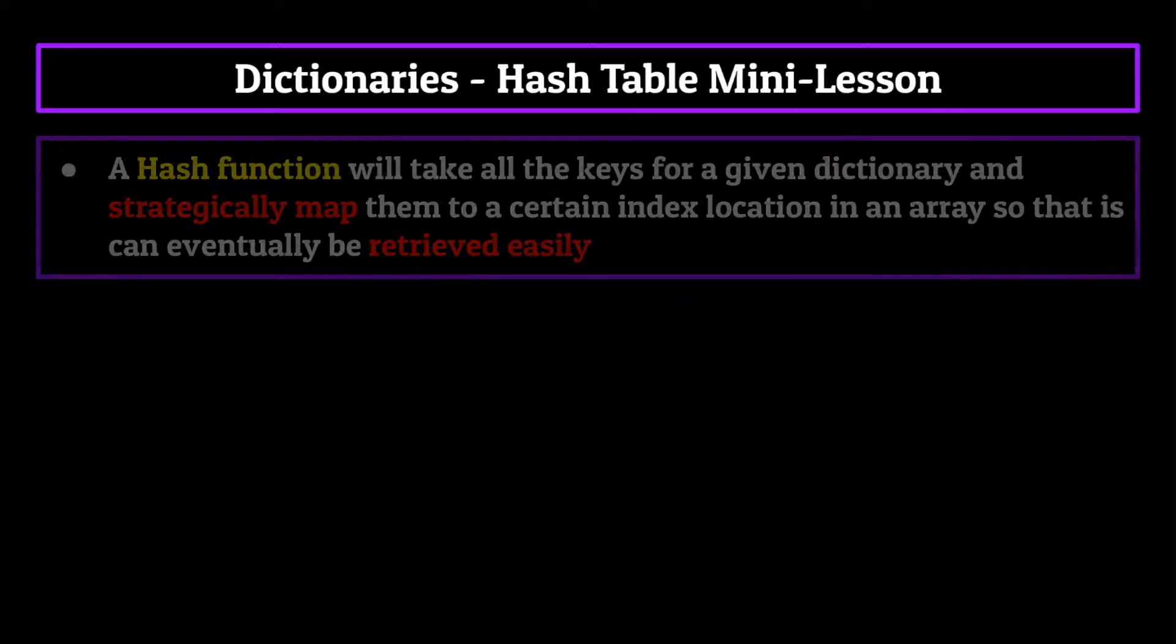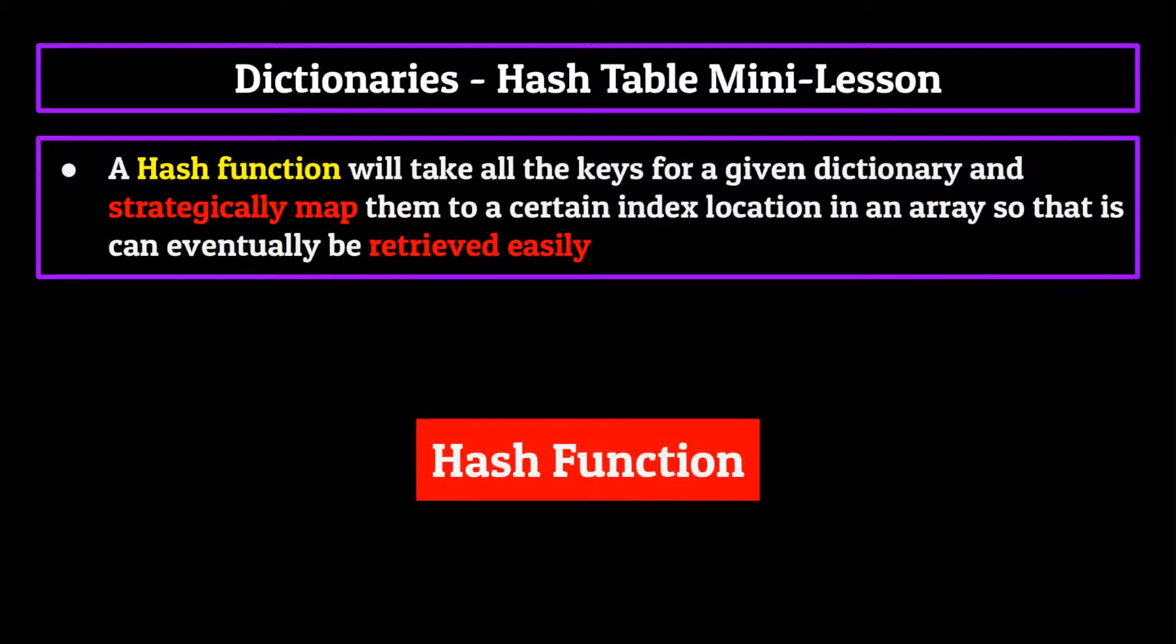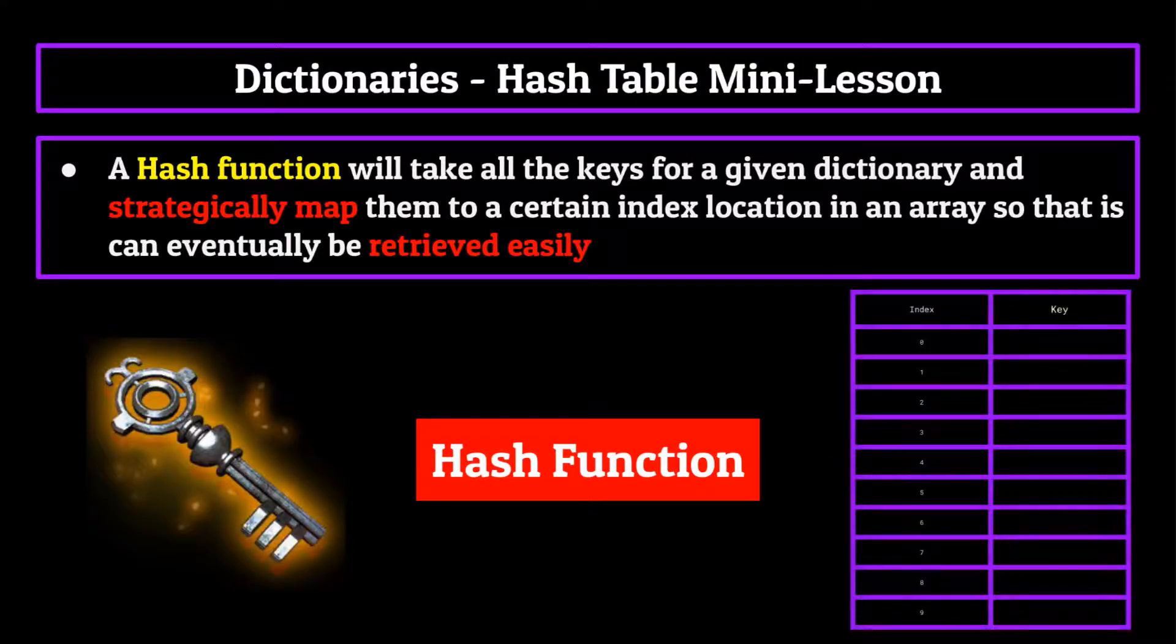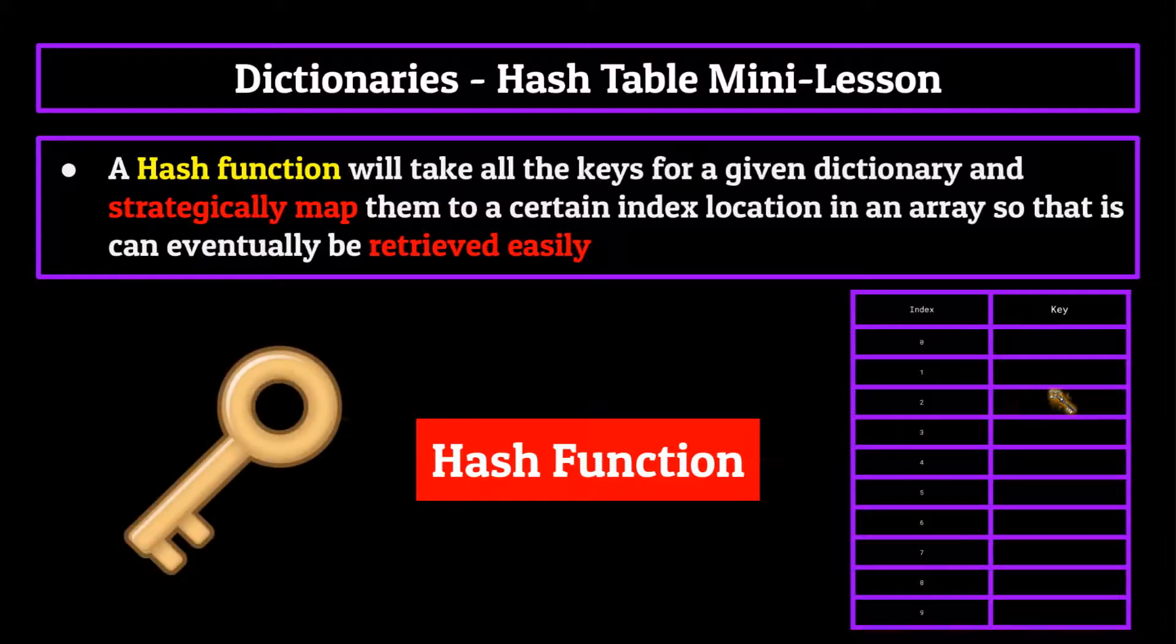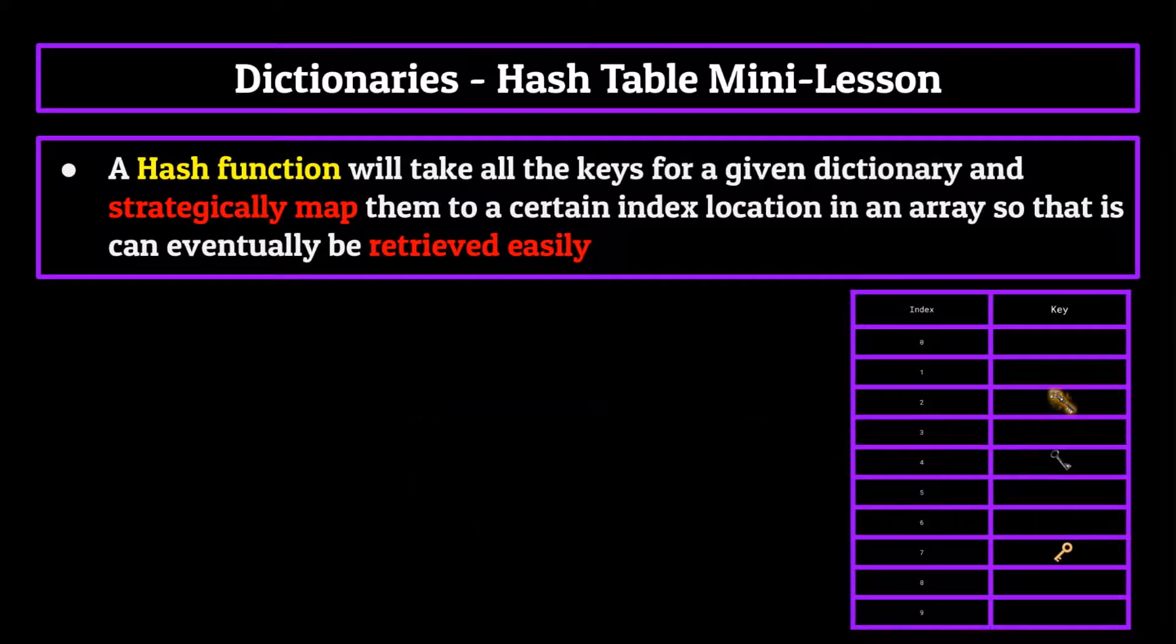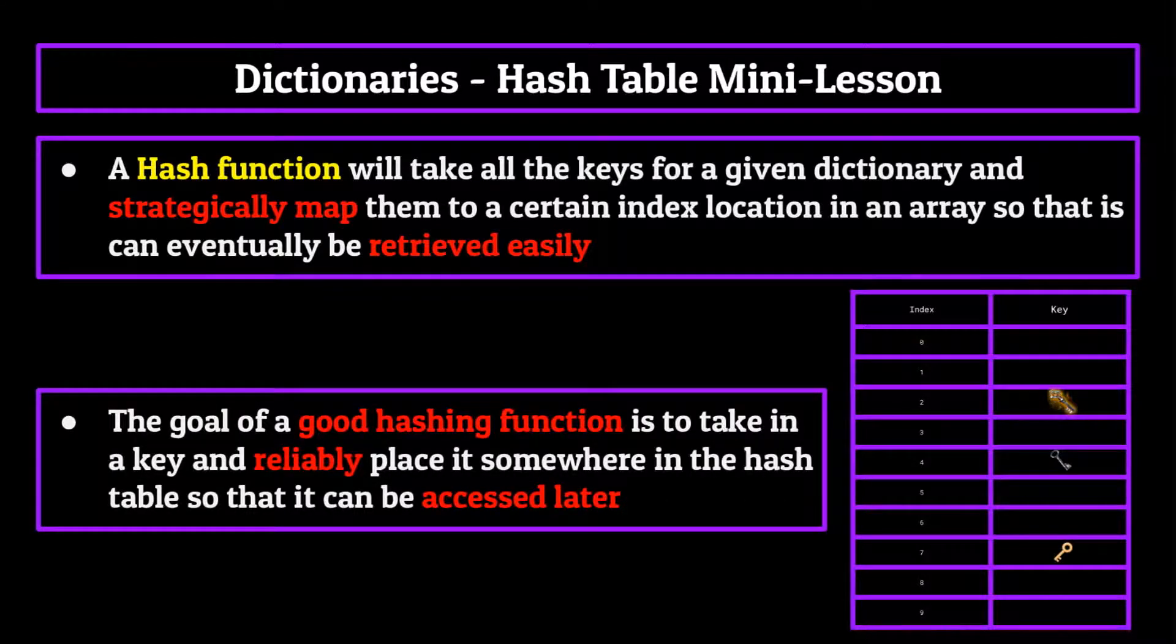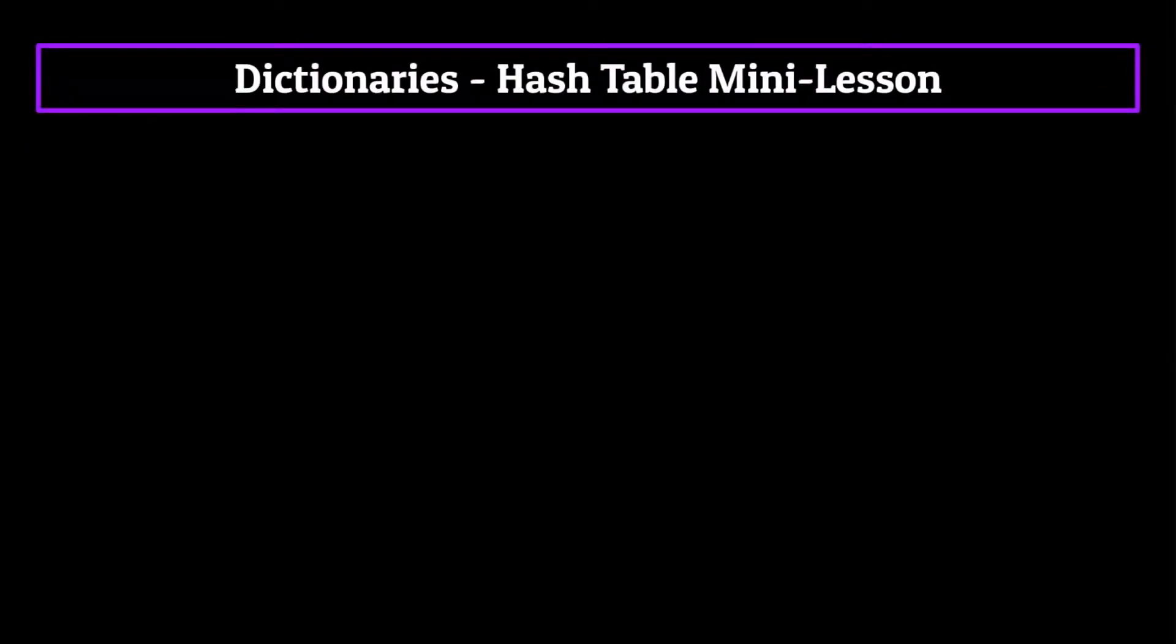A hash function will take all the keys for a given dictionary and strategically map them to certain index locations in a table so that they can eventually be retrieved easily. Essentially, by giving a hash function both a key and a table to map it to, it can determine what index location to store that key at in the array. These hash functions can be pretty much anything. The goal of a good hashing function is to take in a key and reliably place it somewhere in the array so that it can be accessed later.